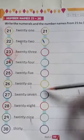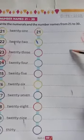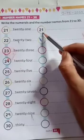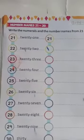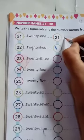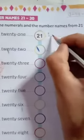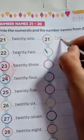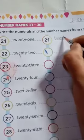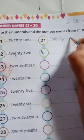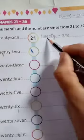First, we will write the numerals here and after that, we will write the number names here. 21 numerals already written here. We will write here number names of 21. Let's start, students. Watch carefully.